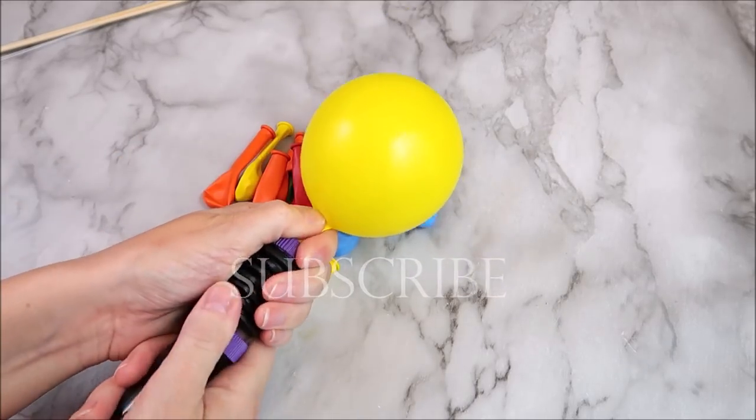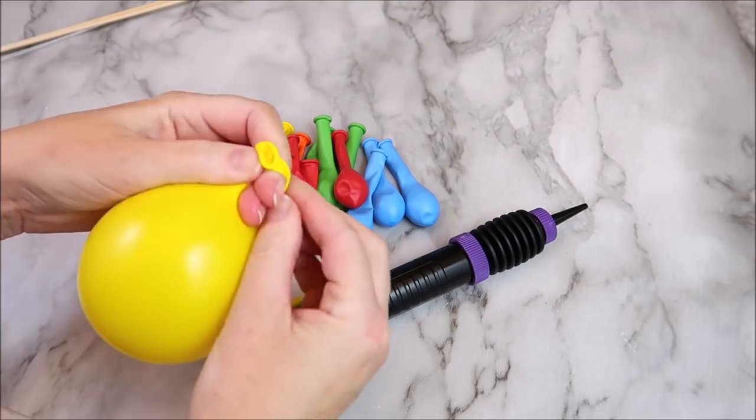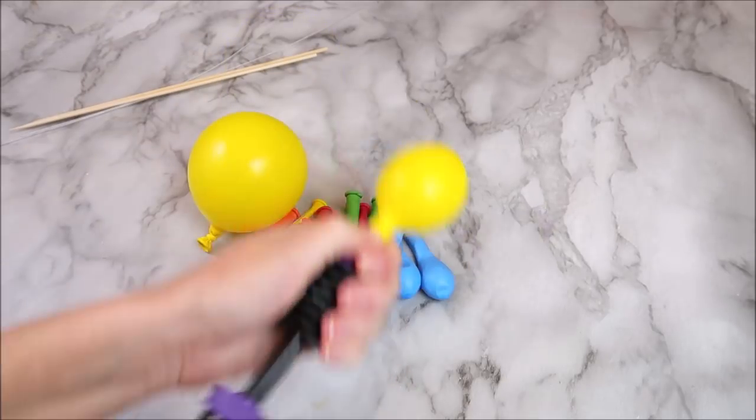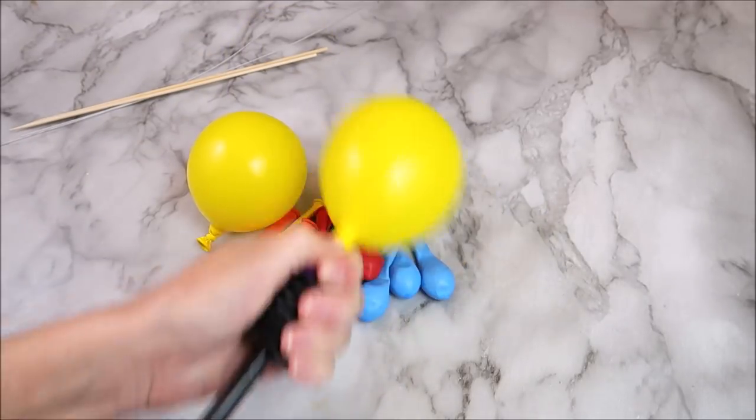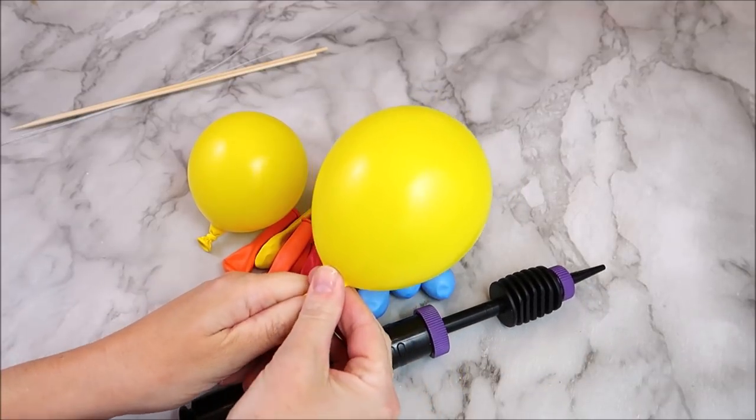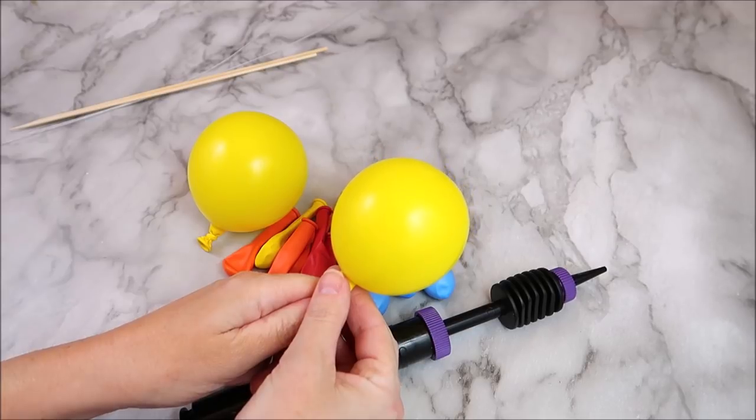So to start out, you're going to blow up your balloons. I'm going to start out by blowing up two balloons in each color just to see how they turn out for size. Now your balloon garland is going to look best if all your balloons are different sizes, and the best way I find to do this is to blow up your balloon to a bigger size and then gradually let some air out of it.